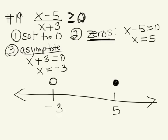Now what we want to do is test a value in each region. So if I test something on the left of negative 3, let's say negative 4, I will have negative 4 minus 5 which gives me negative 9.